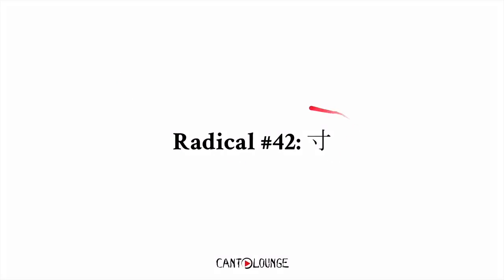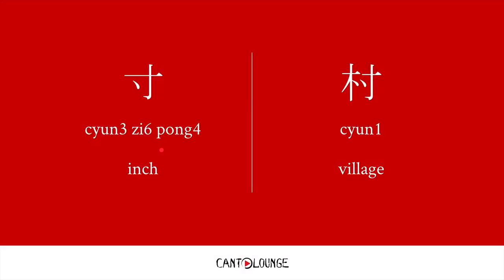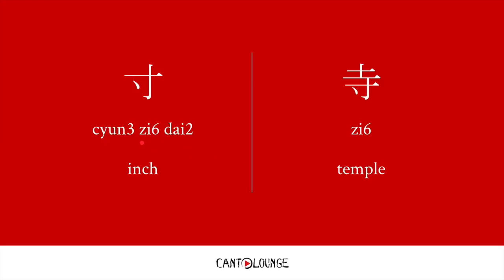Radical 42: we've got 寸. 寸 means an inch. We've got 寸字旁 — it's on the side. For example, 村, meaning village. For some characters it's not always clear what the radical is — for example, is it wood, or is it 寸? You don't really know until you check the word, so it's a bit of a guess sometimes. And 寸字底, if it's at the bottom — for example, 寺, meaning temple.